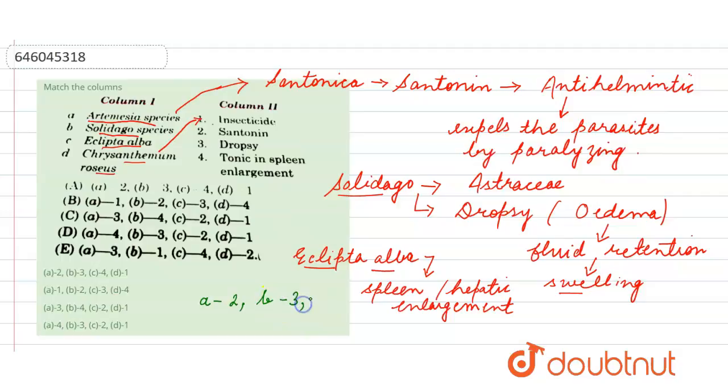So dropsy is written in the third. Then Eclipta alba, tonic in spleen enlargement, so with four. And Chrysanthemum roseus, it matches with the one. So let's check all the options here. A with two, yes. B with three, yes. C with four, yes. And D with one.